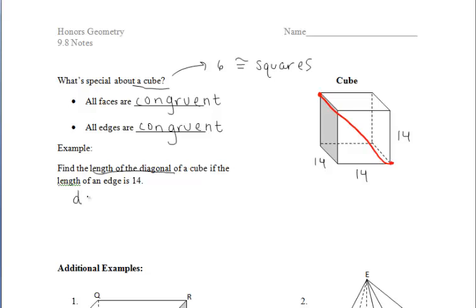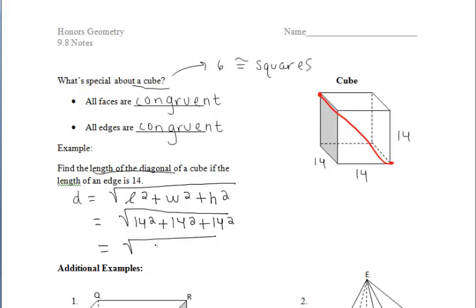So we could find the length of the diagonal by taking the square root of the length squared plus width squared plus height squared. And we know that the dimensions of this shape are 14 by 14 by 14. So I'm doing 14 squared plus 14 squared plus 14 squared, which leaves us with radical 588. Using a quad or our knowledge of perfect squares, let's go ahead and simplify that radical. And it ends up coming out to be 14 radical 3.